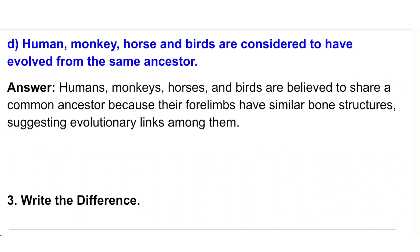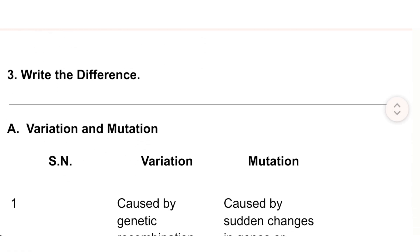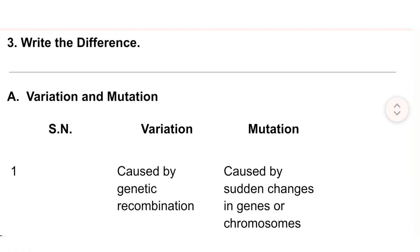Answer: Humans, monkeys, horses, and birds are believed to share a common ancestor because their forelimbs have similar bone structures, suggesting evolutionary links among them.